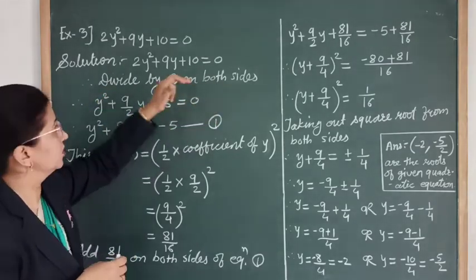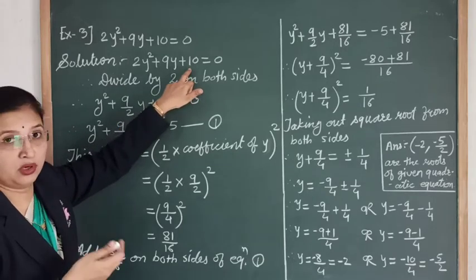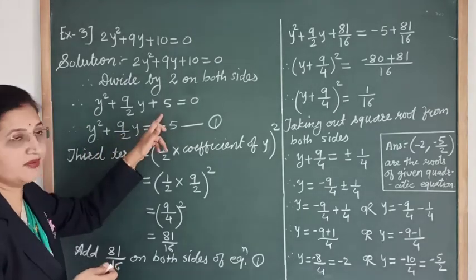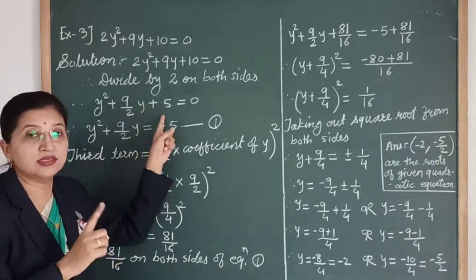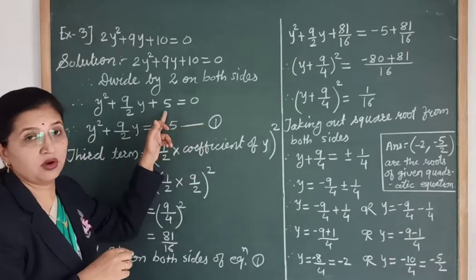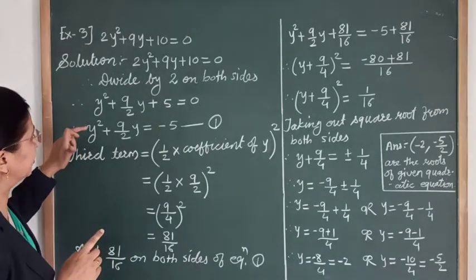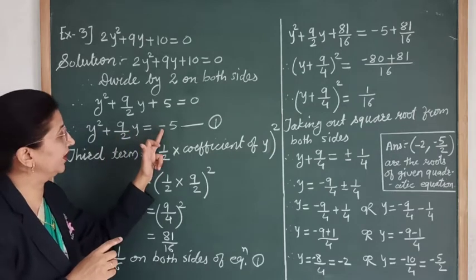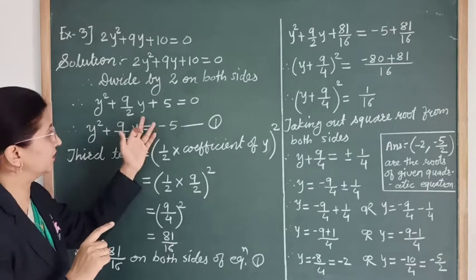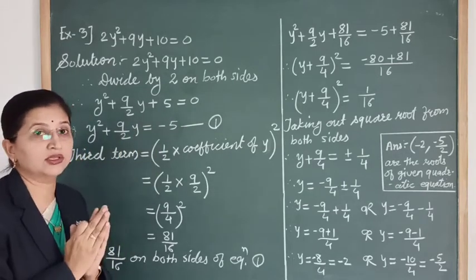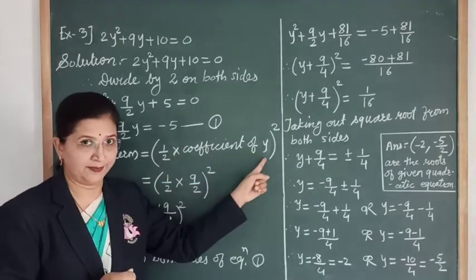Before finding the third term, make sure the coefficient of the squared variable is 1. If it is not 1, divide through by that coefficient. After dividing by 2, we get y² + (9/2)y + 5 = 0. Now we transfer the constant term 5 to the RHS; since it is positive it becomes negative 5. So our equation becomes y² + (9/2)y = -5. Let's call this equation 1.